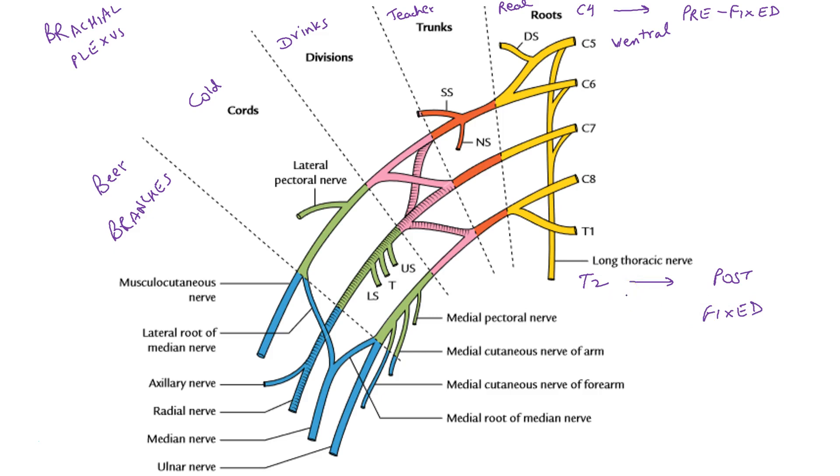The roots and trunks are located in the neck whereas the divisions are located behind the clavicle whereas the cords are located in the axilla.